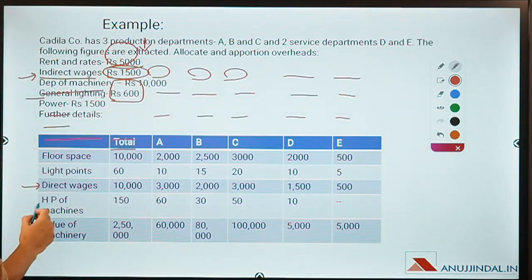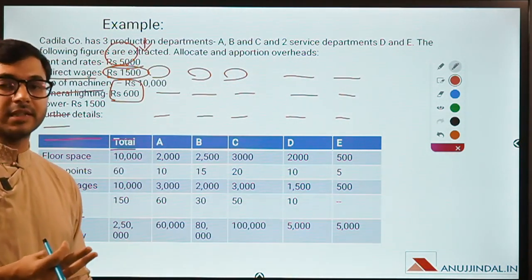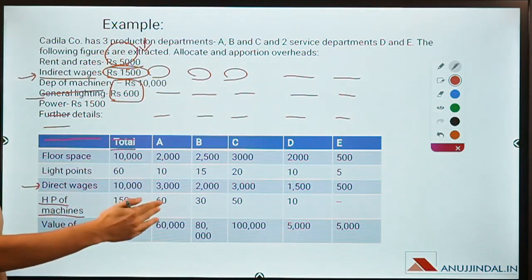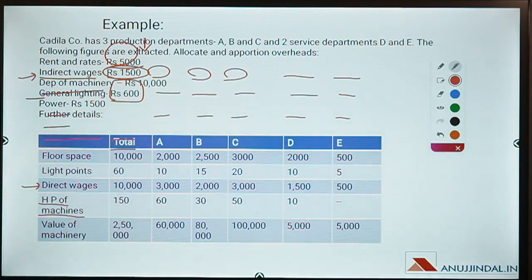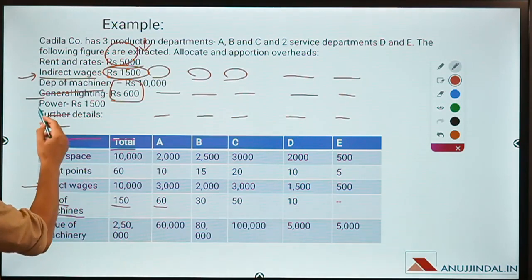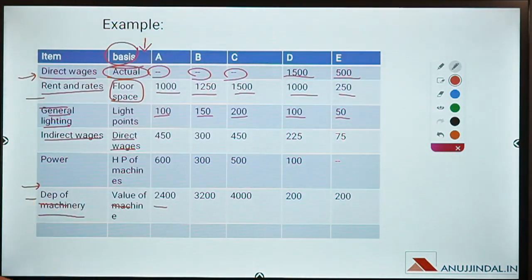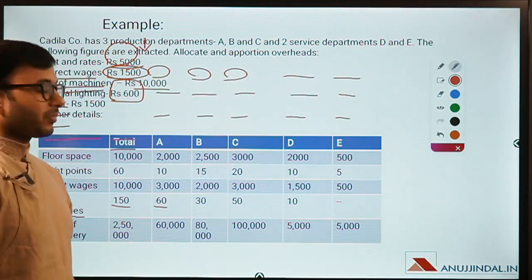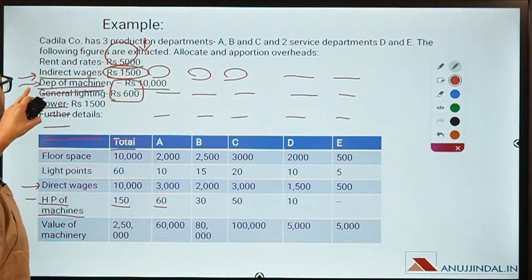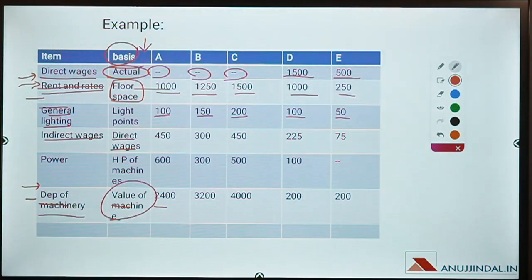Power is to be allocated based on horsepower of machines. The more horsepower a department uses, the more it contributes to the power expense. For example, a production department with high-horsepower machines uses far more power than an administrative department running computers. Depreciation of machinery is rupees 10,000, and this is allocated based on value of machinery — the same proportional division of the asset value is used to divide the 10,000 depreciation across departments.